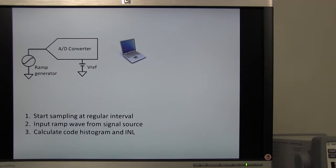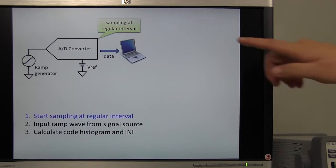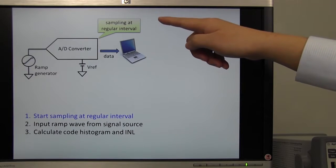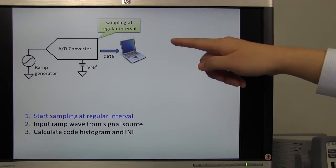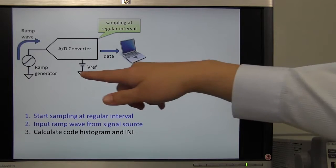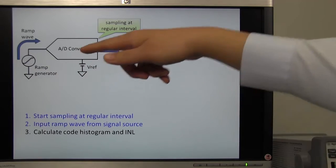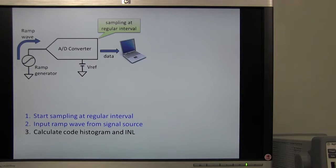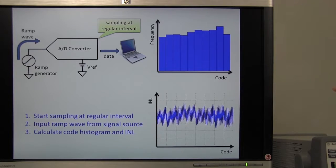The evaluation process has three steps. Step 1, make the ADC start sampling at regular intervals and the sample data are stored into the laptop. Step 2, input ramp wave from signal source. Step 3, calculate code histogram and INL graph.